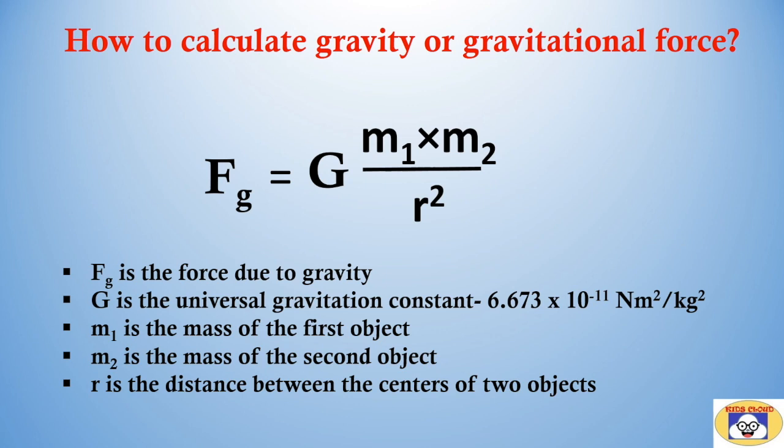G is the universal gravitation constant. Its value is 6.673 times 10 to the power minus 11 newton meter square per kilogram square. M1 is the mass of the first object. M2 is the mass of the second object. R is the distance between the centers of two objects.